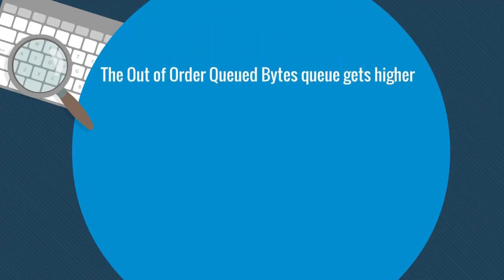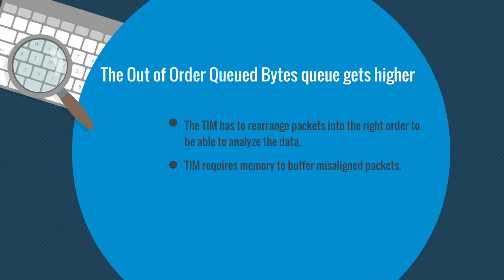Another problem is the out-of-order queued bytes queue gets higher. The TIM must rearrange packets into the right order to be able to analyze the data. TIM requires memory to buffer misaligned packets. Check the out-of-order queued bytes in the TIM log. An increasing buffer queue indicates that the data getting to the TIM is misaligned — for example, the end of a webpage arriving before the beginning. When the out-of-order queued bytes buffers are higher, look for a problem on the data-providing infrastructure.